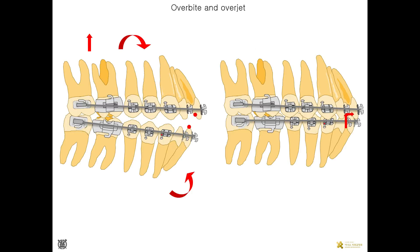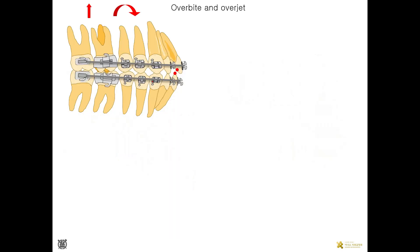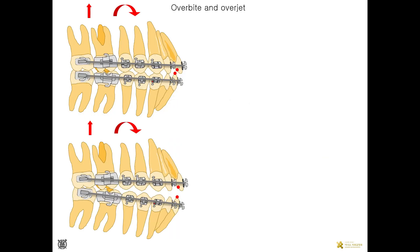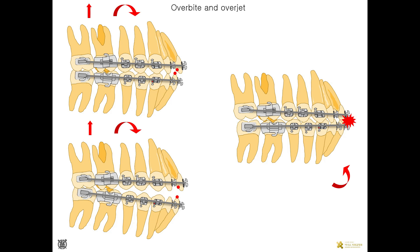By posterior intrusion and subsequent mandibular plane rotation, the lower incisor moves forward and upward. If the patient's overbite or overjet was not enough, premature contact in incisors can be observed during the intrusion. So overbite and overjet should be controlled during the treatment.